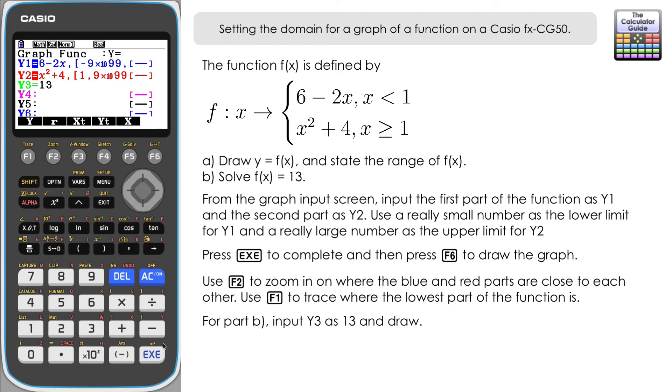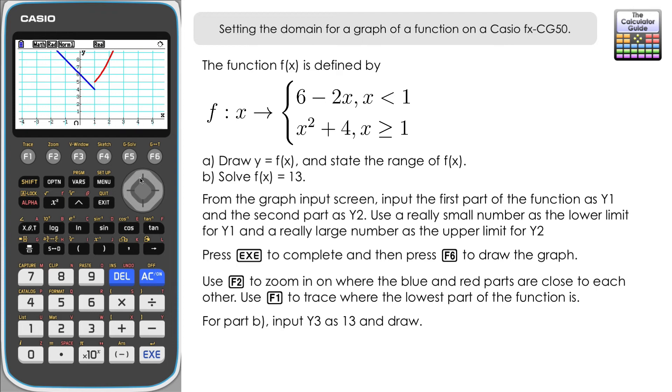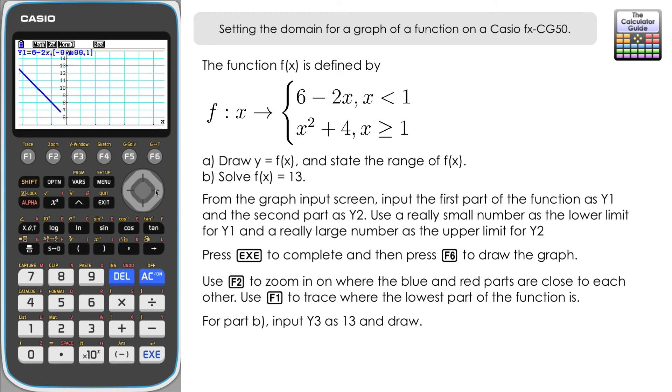So that would be when f(x) equals 13. Let's draw that and if we scroll up we should be able to see a straight line there going through 13 on the y-axis which represents when the function equals 13. You can see there are two intersection points there. One between the blue part of the graph and one between the red part. The two different pieces of the function. And we're going to use G-Solve to find out their location.